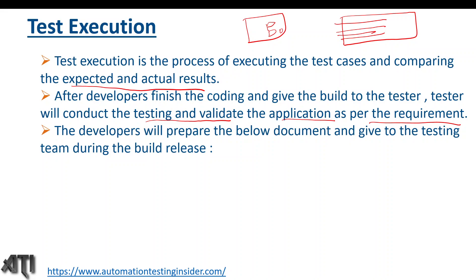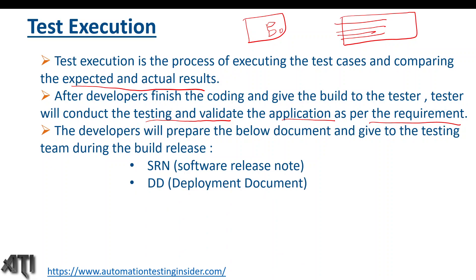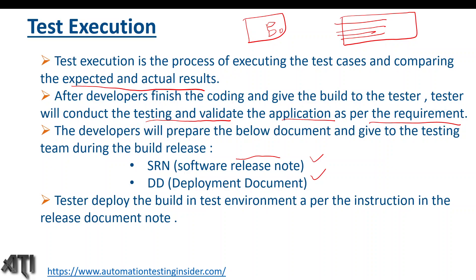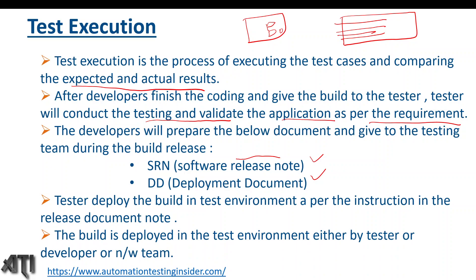The developers prepare a couple of documents during the build release. One is the SRN — Software Release Note — and the other is the DD — Deployment Document, which describes how a particular build should be deployed. The Software Release Note contains version, build name, product name, and related details. The tester deploys the build in the test environment as per the deployment instructions, and this is done either by the tester, developer, or network team.